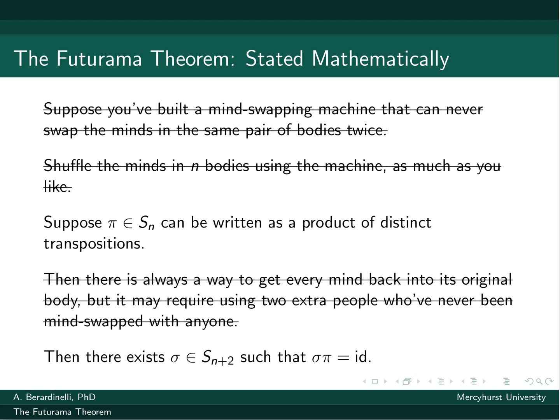Id stands for identity. In permutations, this just means one goes to one, two goes to two, three goes to three. Everything ends up back where it belongs. So it's saying π will shuffle it and σ will unshuffle it. But σ might require two extra things, this Sn plus two.